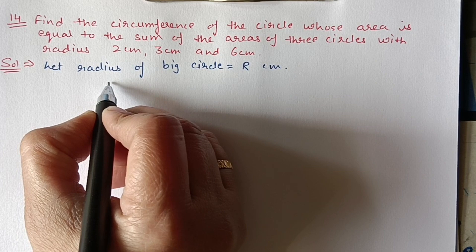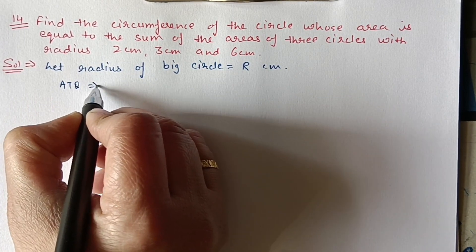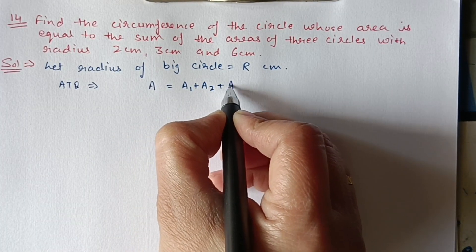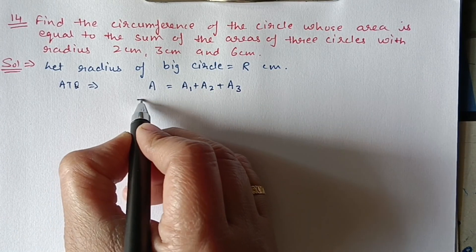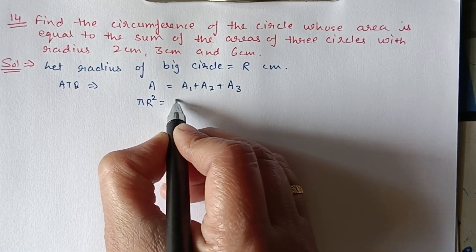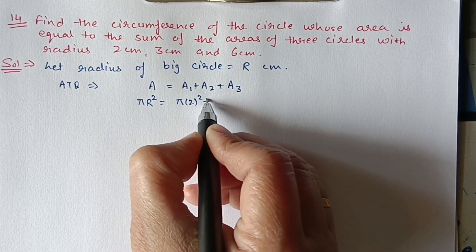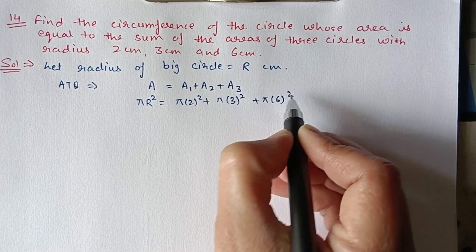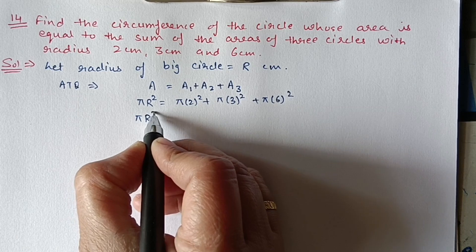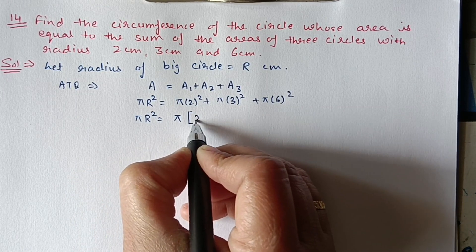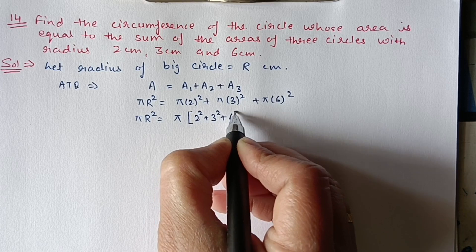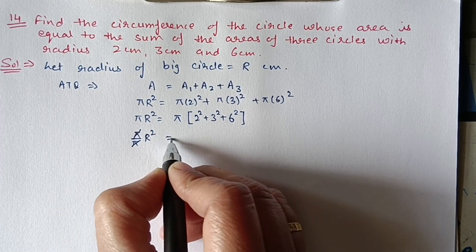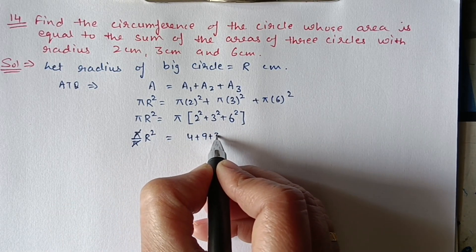According to the question, the area of the bigger circle A equals the area of the first circle plus the area of the second circle plus the area of the third circle. Area formula is πr². So: πr² = π(2²) + π(3²) + π(6²). Taking π common: r² = 2² + 3² + 6². π cancels from both sides, giving r² = 4 + 9 + 36.